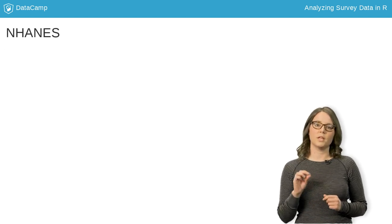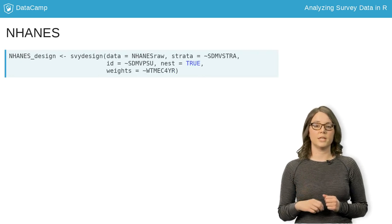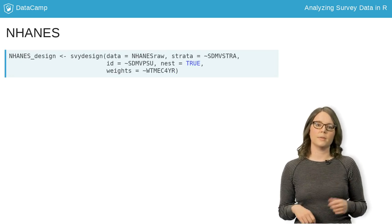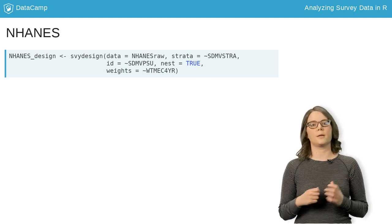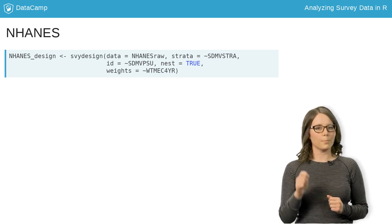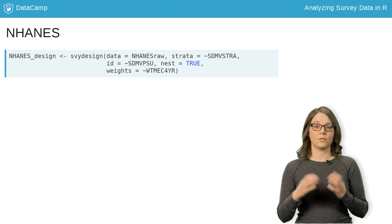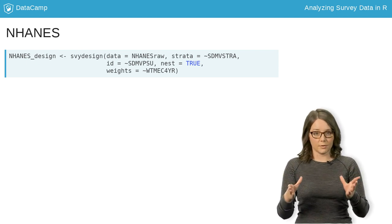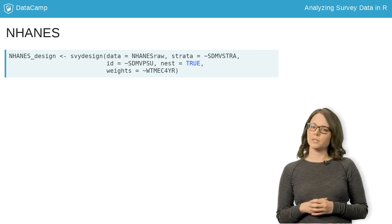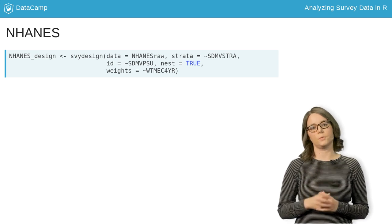Let's specify the design with the R function, survey design. In the arguments, we need to provide the data set, NHANES-RAW, and the strata column, sdmv-strata. Remember, ID is where we specify the variables that represent the clusters. While the design actually had three levels of clusters — counties, city blocks, households — it's common practice to only specify the first level, denoted here by sdmv-psu.